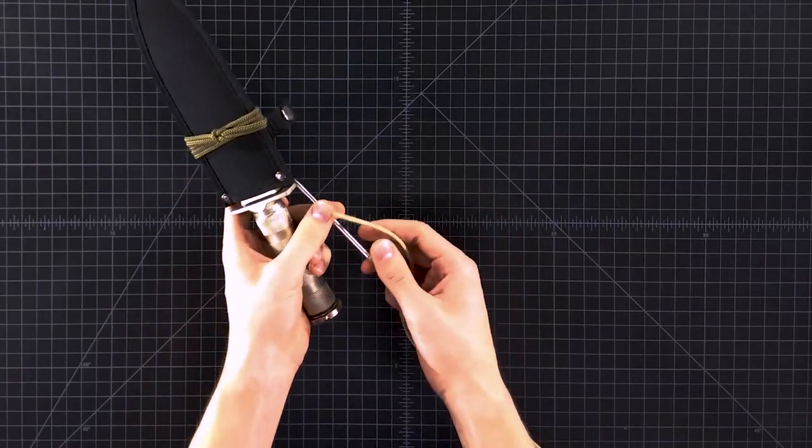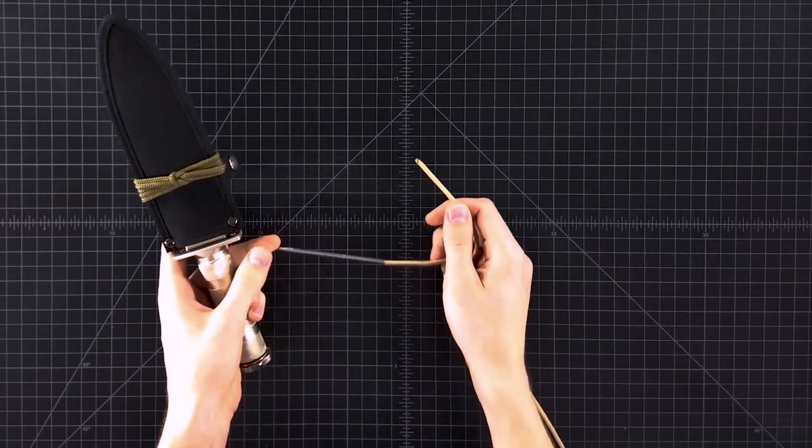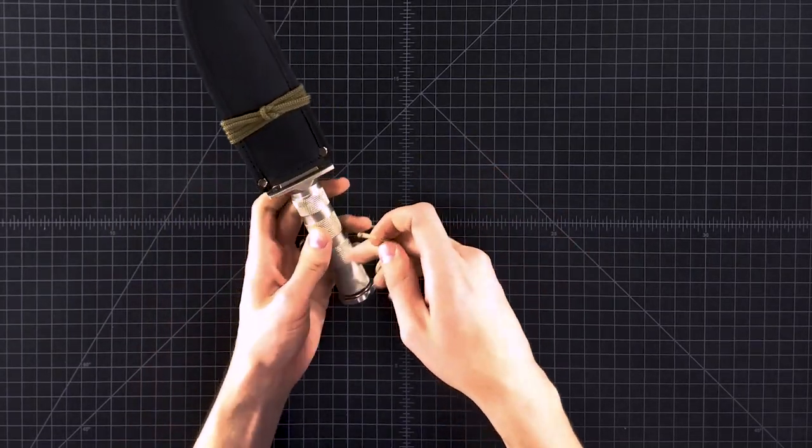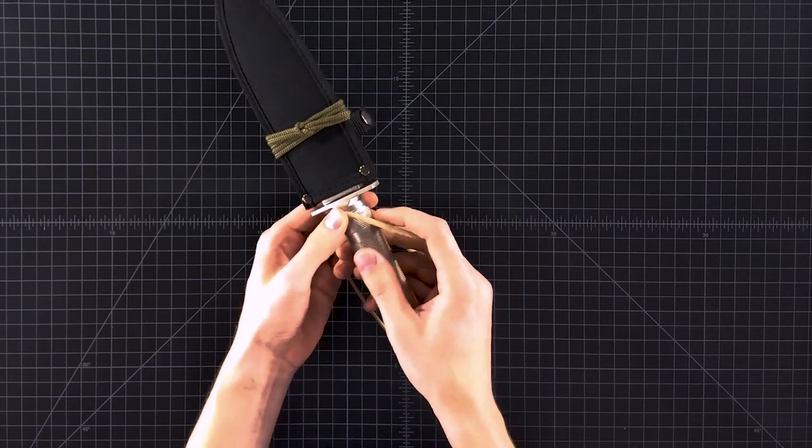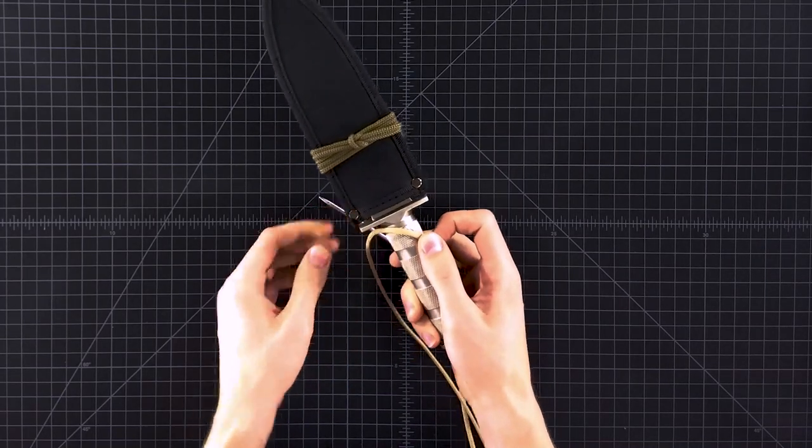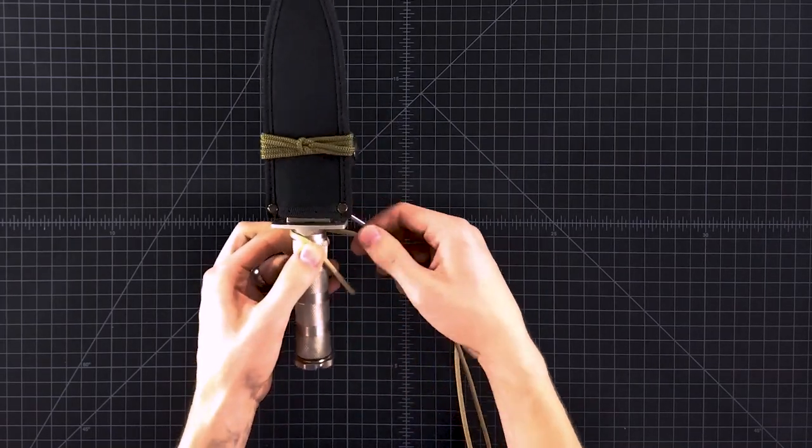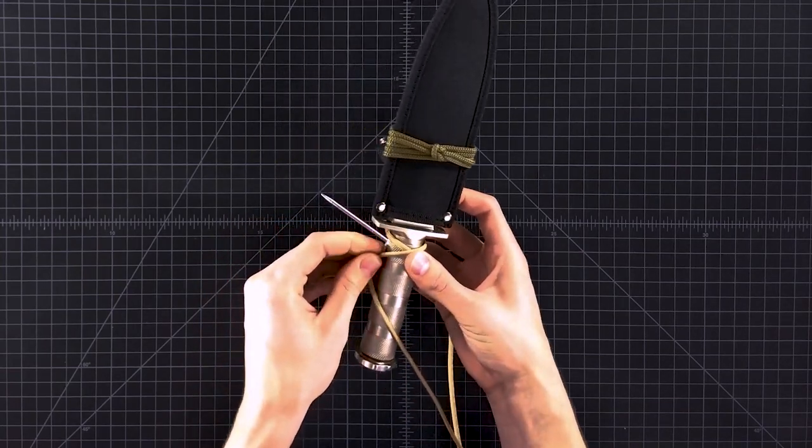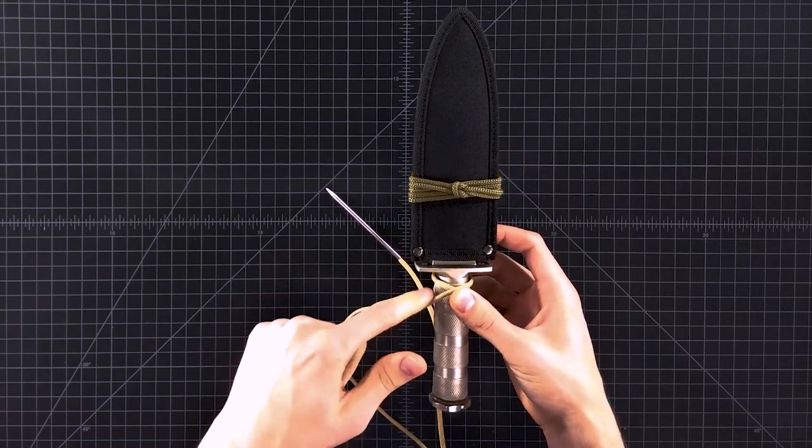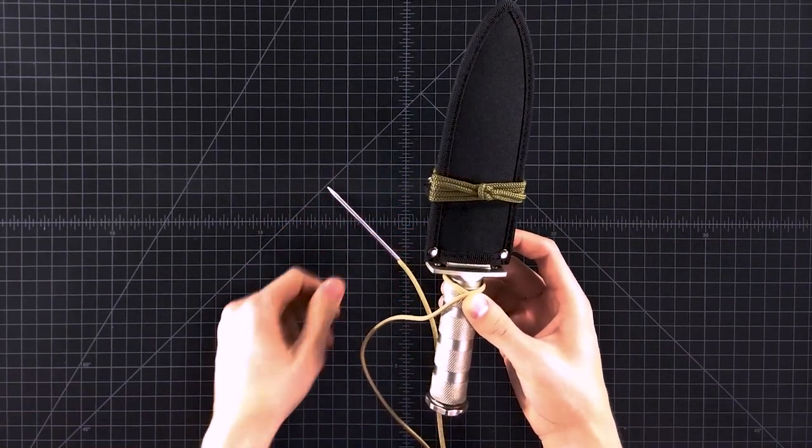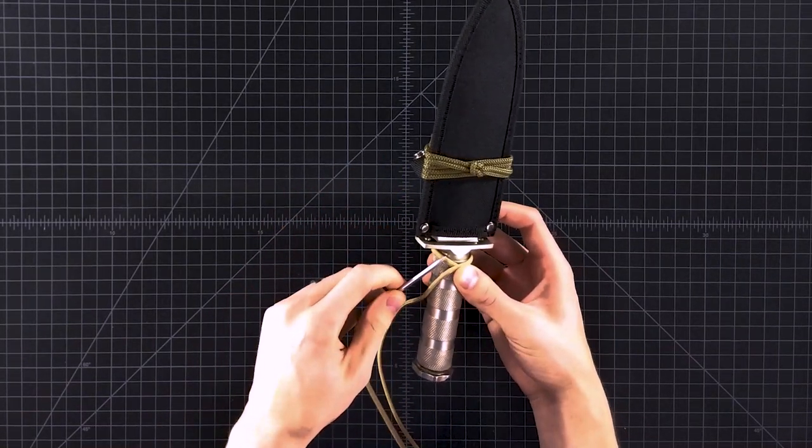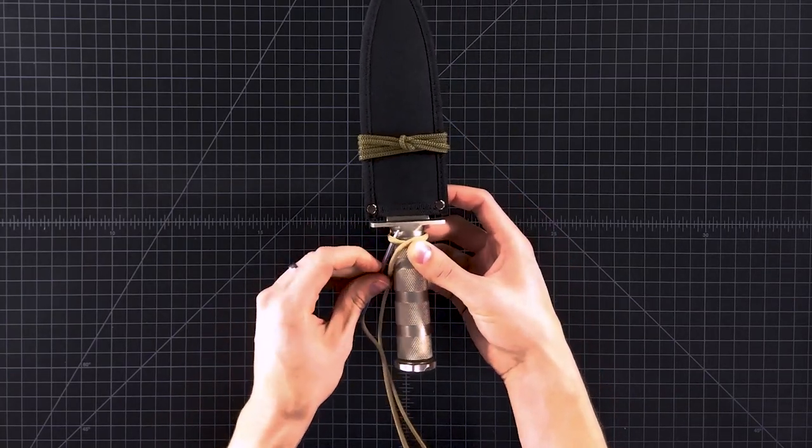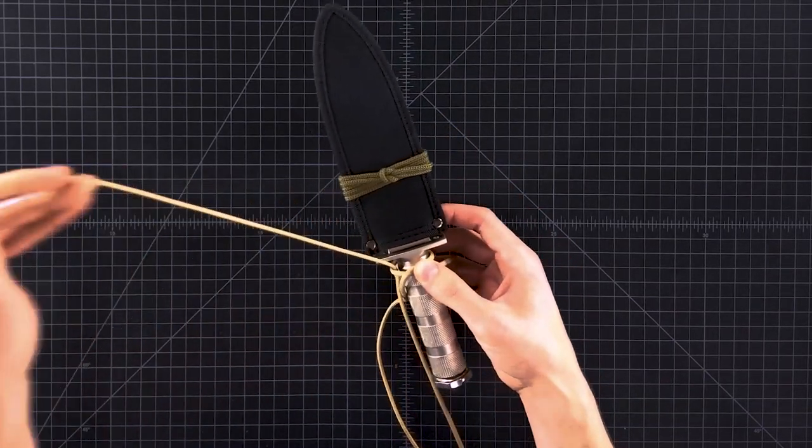We're going to start by putting a fid on one end and taking the other end here and just laying it across your handle. You go around with this one. And then for most of this tutorial, you're just going to be coming up through the previous layer. And so we'll start that now. Coming up through that loop that we just created.